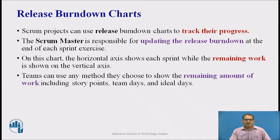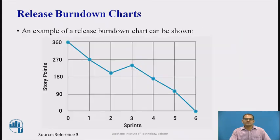The remaining amount of work can include story points, team days, and ideal days. In this example, the chart shows that the team started with 360 story points to successfully complete their project in a planned 6 sprints. For example, the team would have to average 60 story points for each sprint.